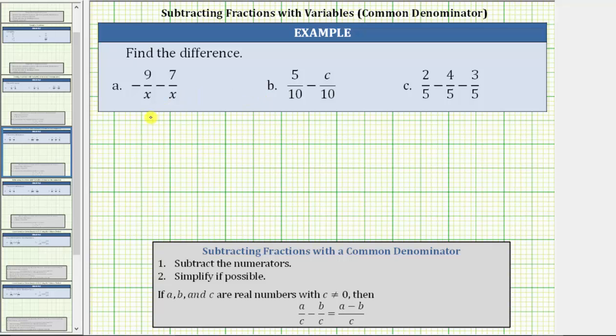We are asked to find each difference. Looking at each difference, notice how we have a common denominator. To subtract fractions with a common denominator, we subtract the numerators and simplify if possible. If we have a over c minus b over c, this is equal to the quantity a minus b over c. Notice how the denominator remains the same and we subtract the numerators.